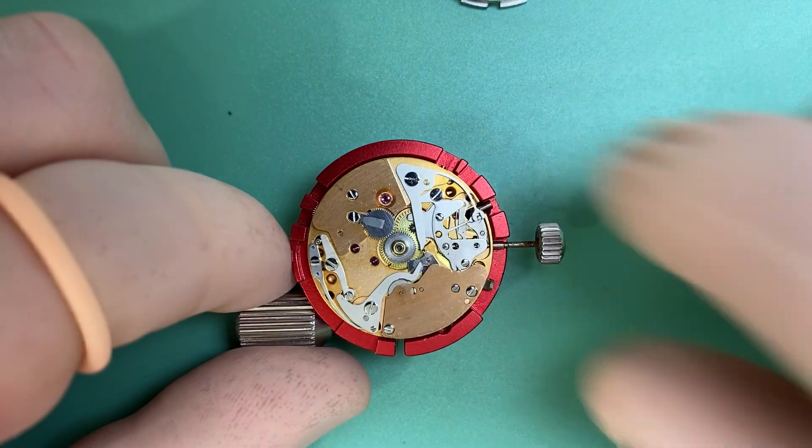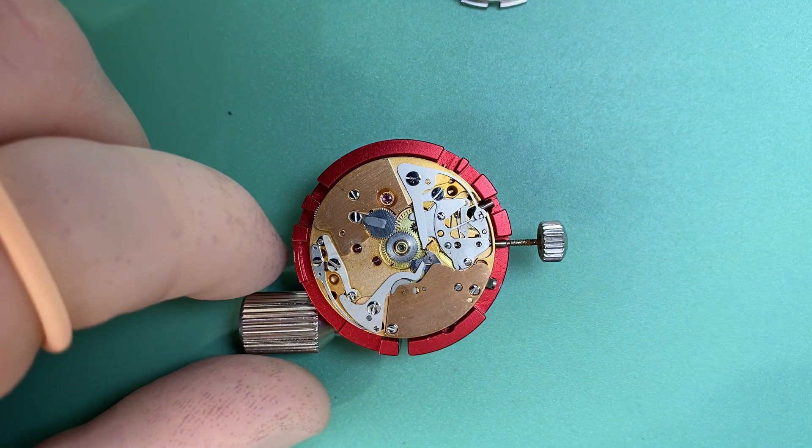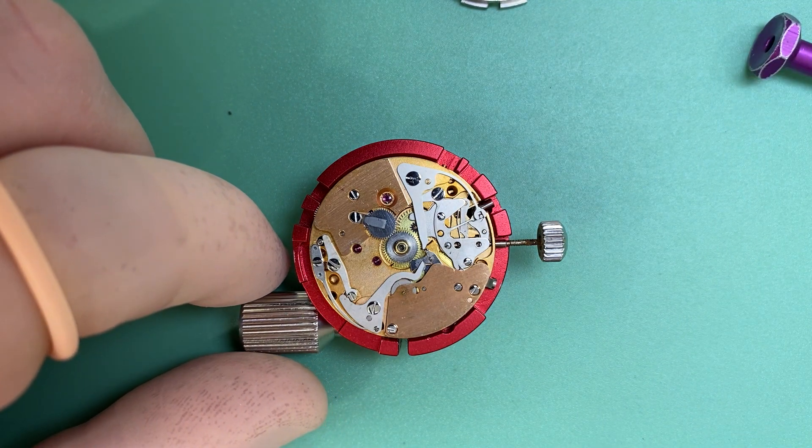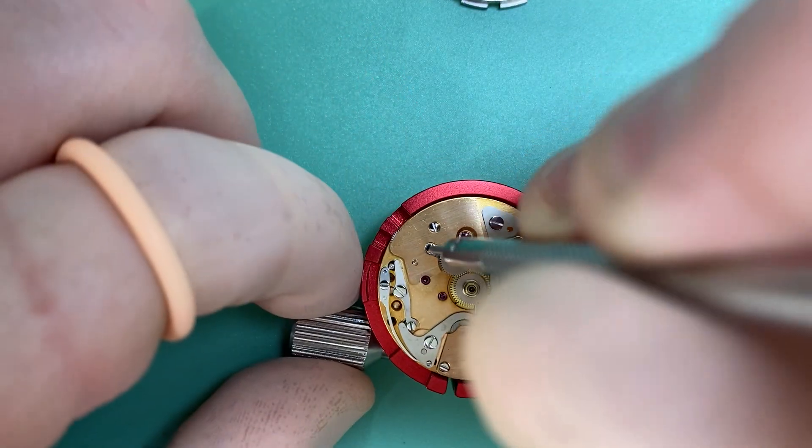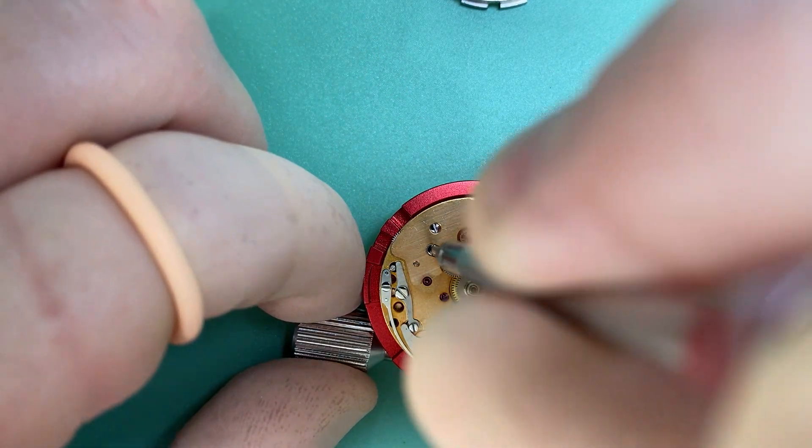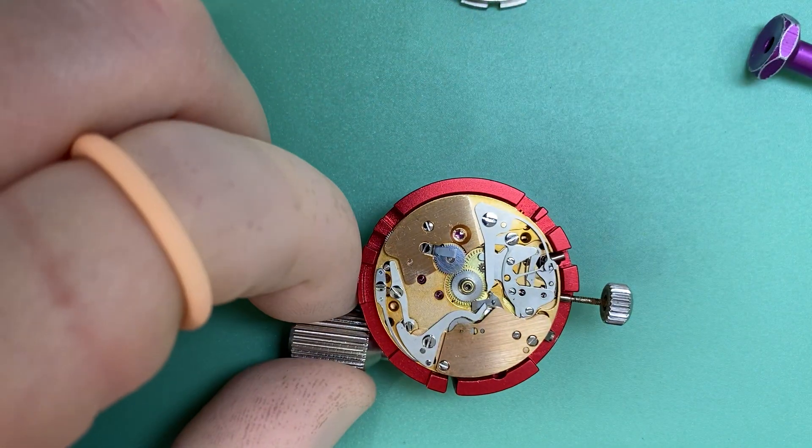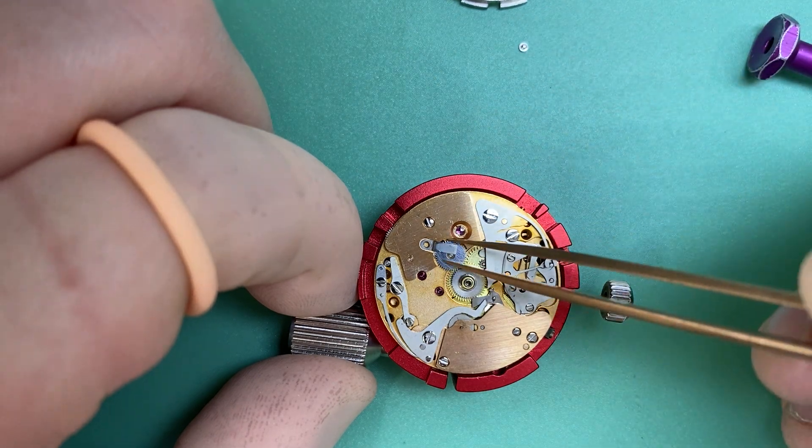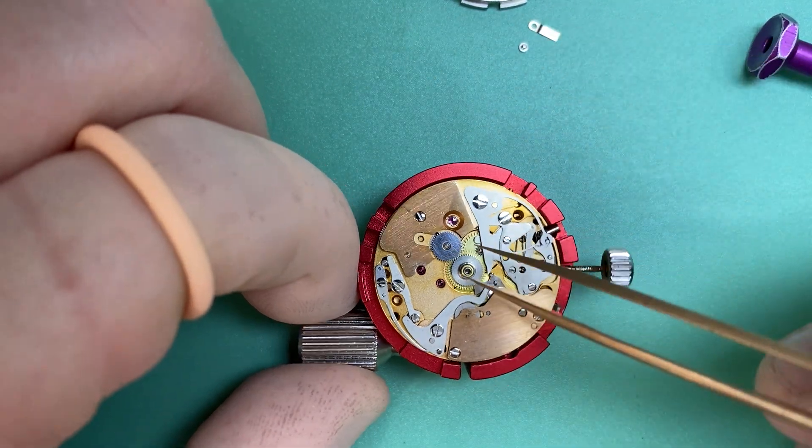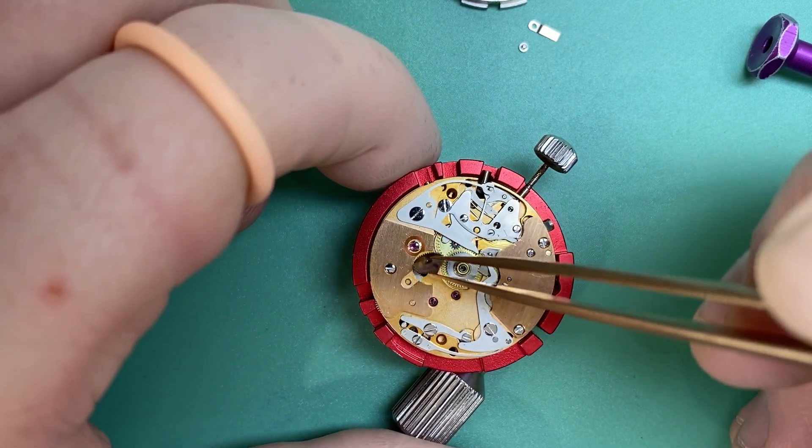So there you have it. Now, how does it all work? Well, it's actually quite clever, the way it works. If we start to dismantle our movement, we can actually have a look at the inner workings. So we remove our spring, our friction spring, and then we can remove our wheel on top.